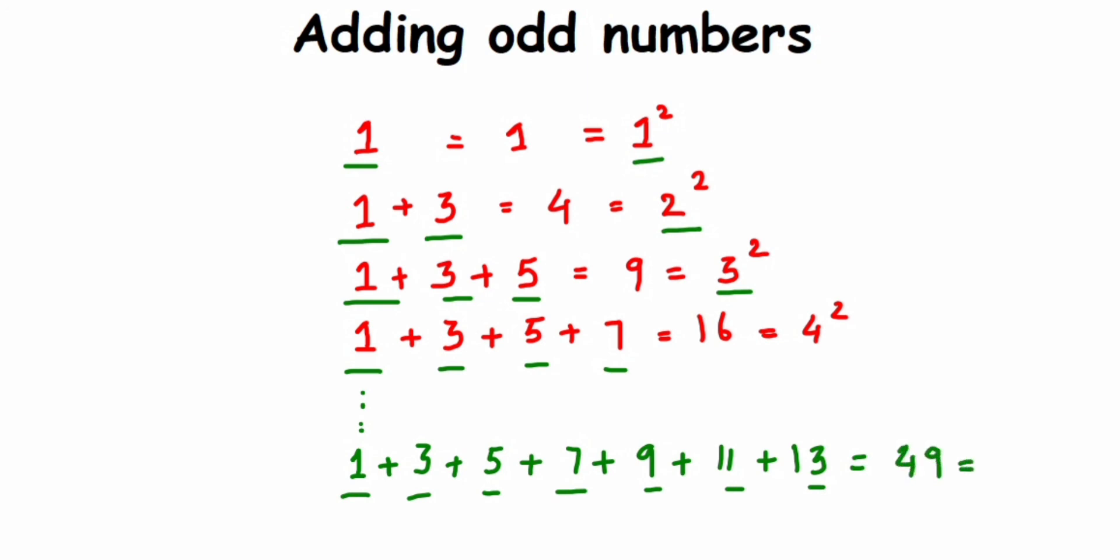And this will be equal to 7 squared, which is 49. So this is one of the small tricks in this chapter square and square root. I hope it's clear. Thank you so much for watching.